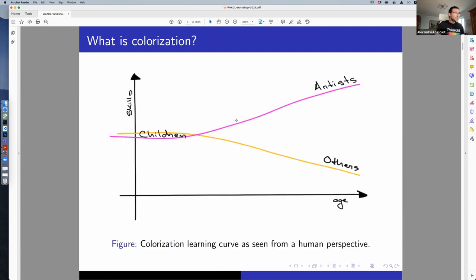In terms of what is colorization, it's something that children are inherently good at. As we grow up, we can be on either of these two lines: we can be artists and know how to add color within the lines, or we can be the other people that don't know how painting works. Here is the learning curve for colorization.